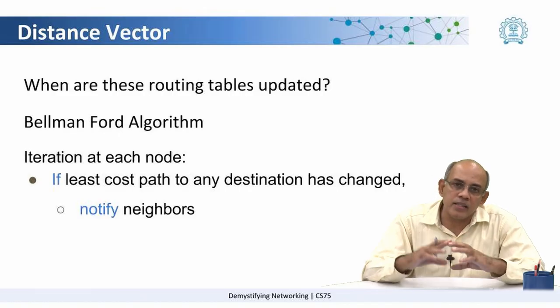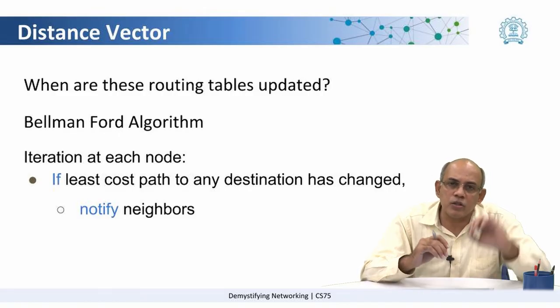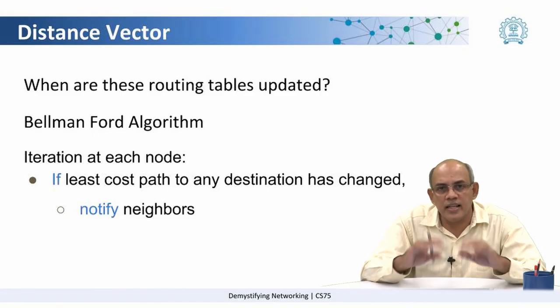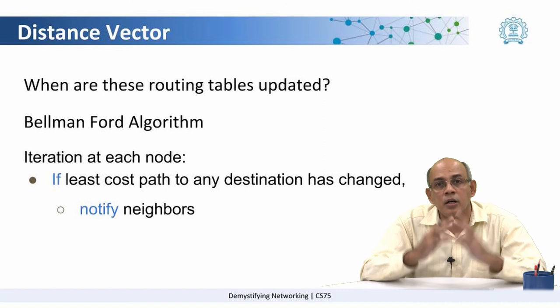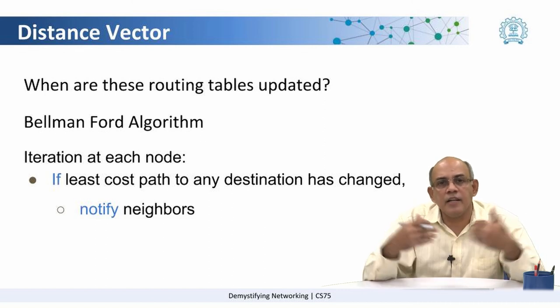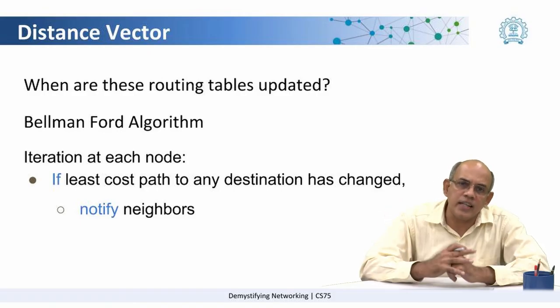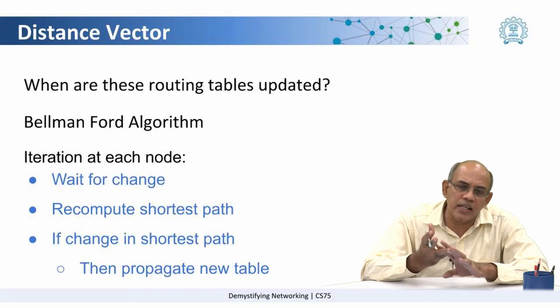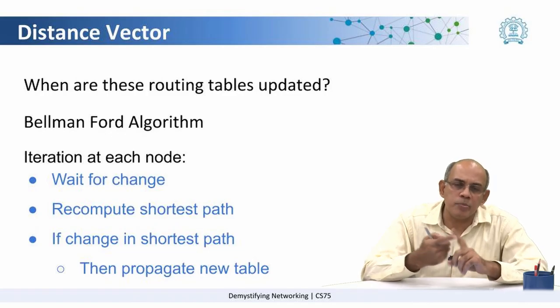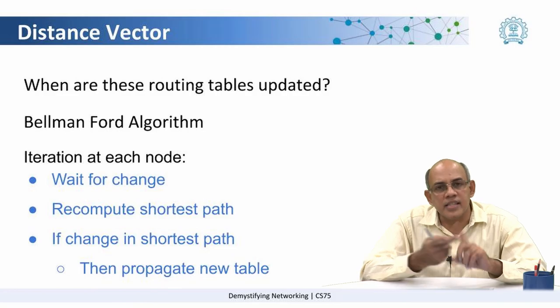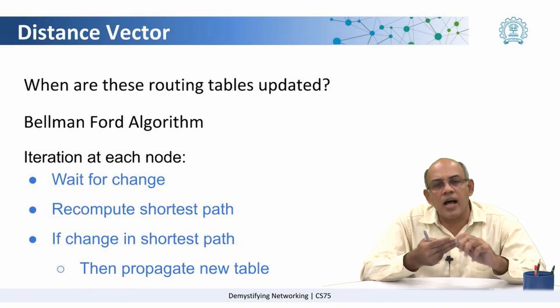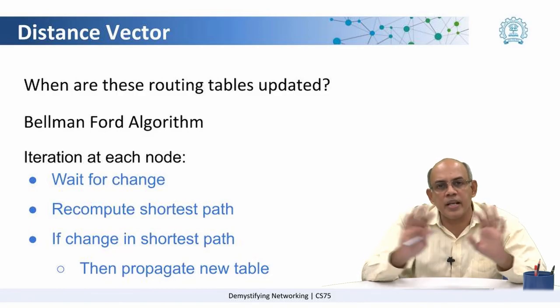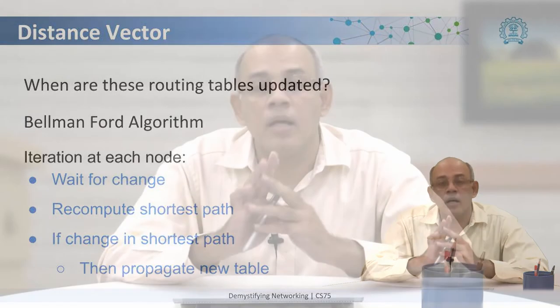The third step is: if the least cost to any destination in the network has changed as a result of this recomputation, then that information must be propagated to my neighbors, so that it can be updated in all routers in the network. So essentially, the Bellman-Ford algorithm has three steps: wait for a change, recompute if necessary, and propagate the updated information through the network. We will now see an example of how this algorithm works in a typical network.